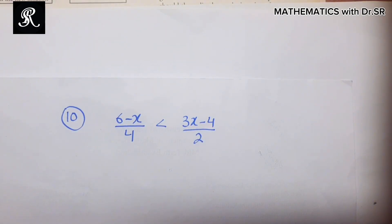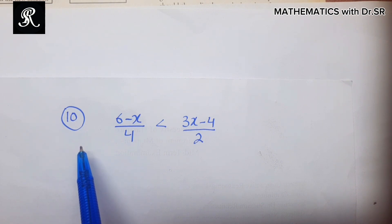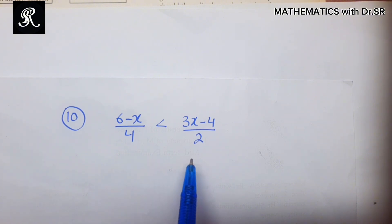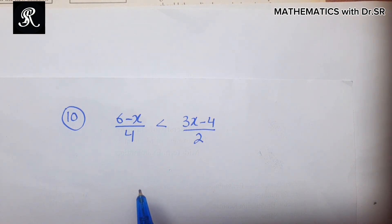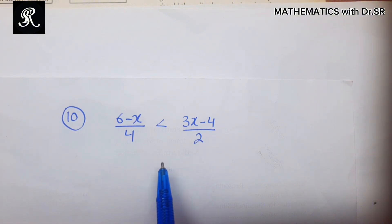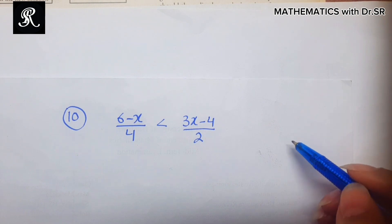In this video I will discuss problem 10 of the inequalities, as we had already discussed problems 5 to 9. This is an inequality involving fraction terms. In order to solve such an inequality, we need to get rid of the fractions, and to do so we will multiply both sides by the least common multiple of the denominators, which here would be 4.